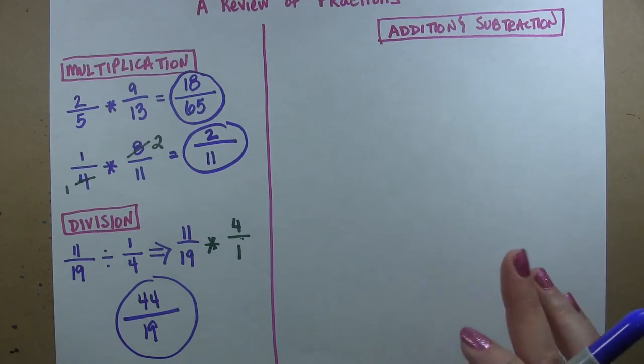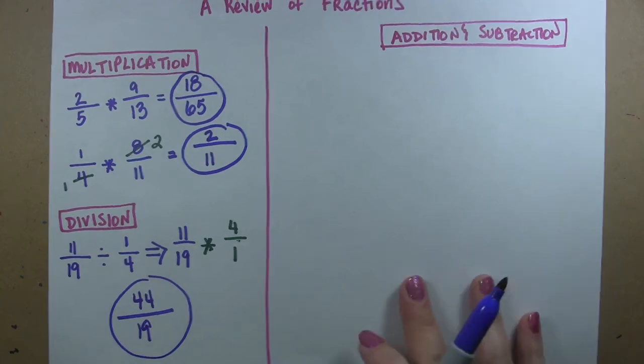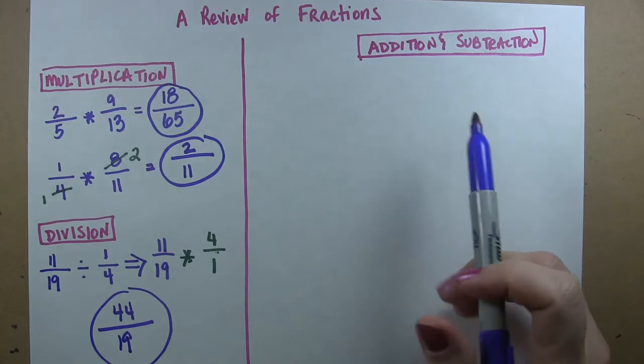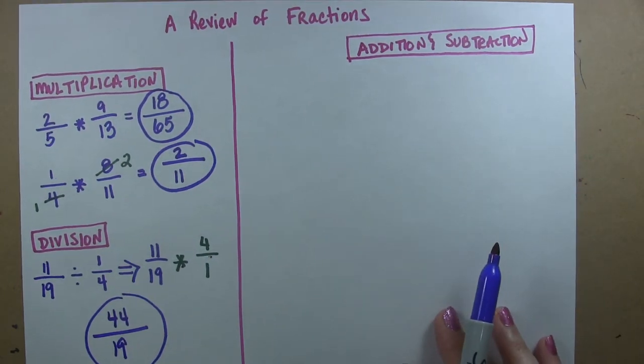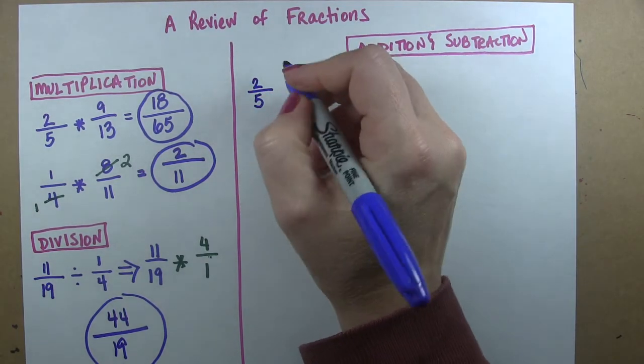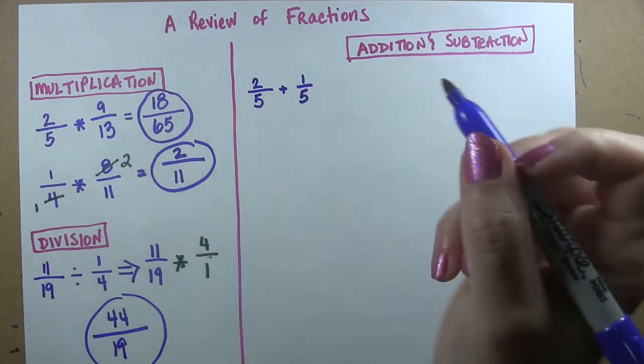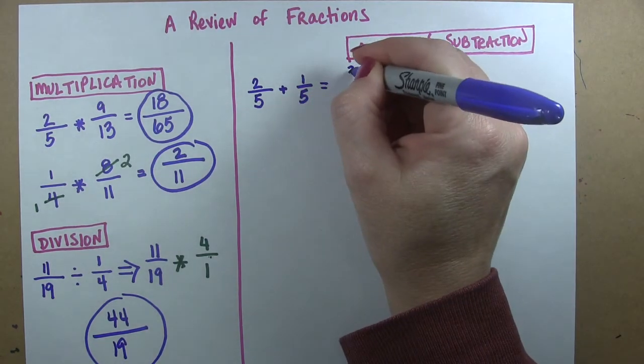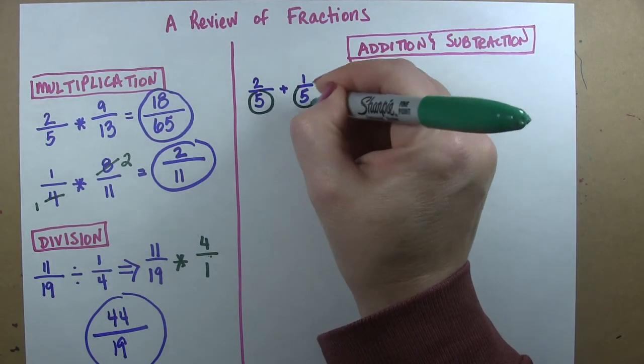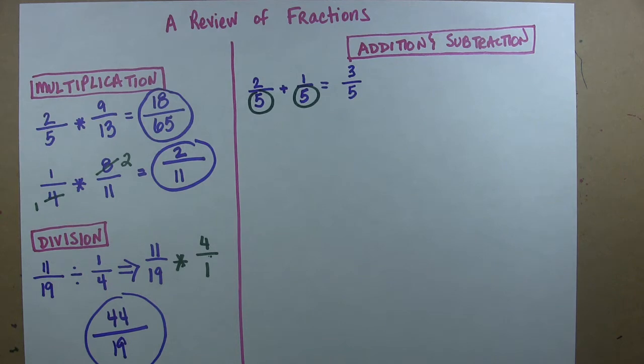Okay so addiction, not addiction, addiction is terrible. Addition is not nearly as bad. Addition and subtraction are more challenging than multiplication and division when we're talking about fractions. So here's an easy problem. Let's say we had 2 fifths plus 1 fifth. And we know that this equals 3 fifths. And we are happy when we see this kind of problem because we see that our denominators are the same, which means that we can just add the numerators and then keep the denominator still at 5. So that is good news.